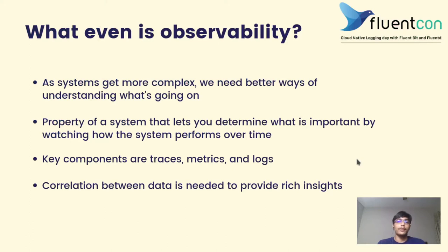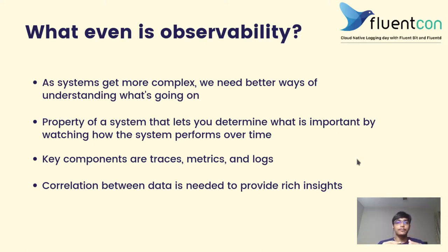Before we start talking about OpenTelemetry itself, I think it is important to understand what observability is and what are the few pain points OpenTelemetry is trying to address. Observability is basically a property of your system or application that allows you to determine what's going on in your system. You do this by collecting data from the system, and these data are mainly of three types: logs, metrics, and traces. Logs are timestamped records that denote the events that occurred in your system.